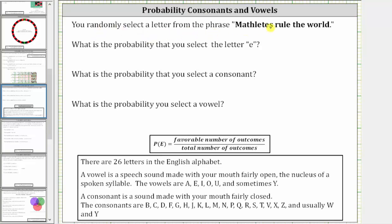You randomly select a letter from the phrase, Mathletes rule the world. We want to determine the following probabilities: the probability you select an E, the probability you select a consonant, and the probability you select a vowel.